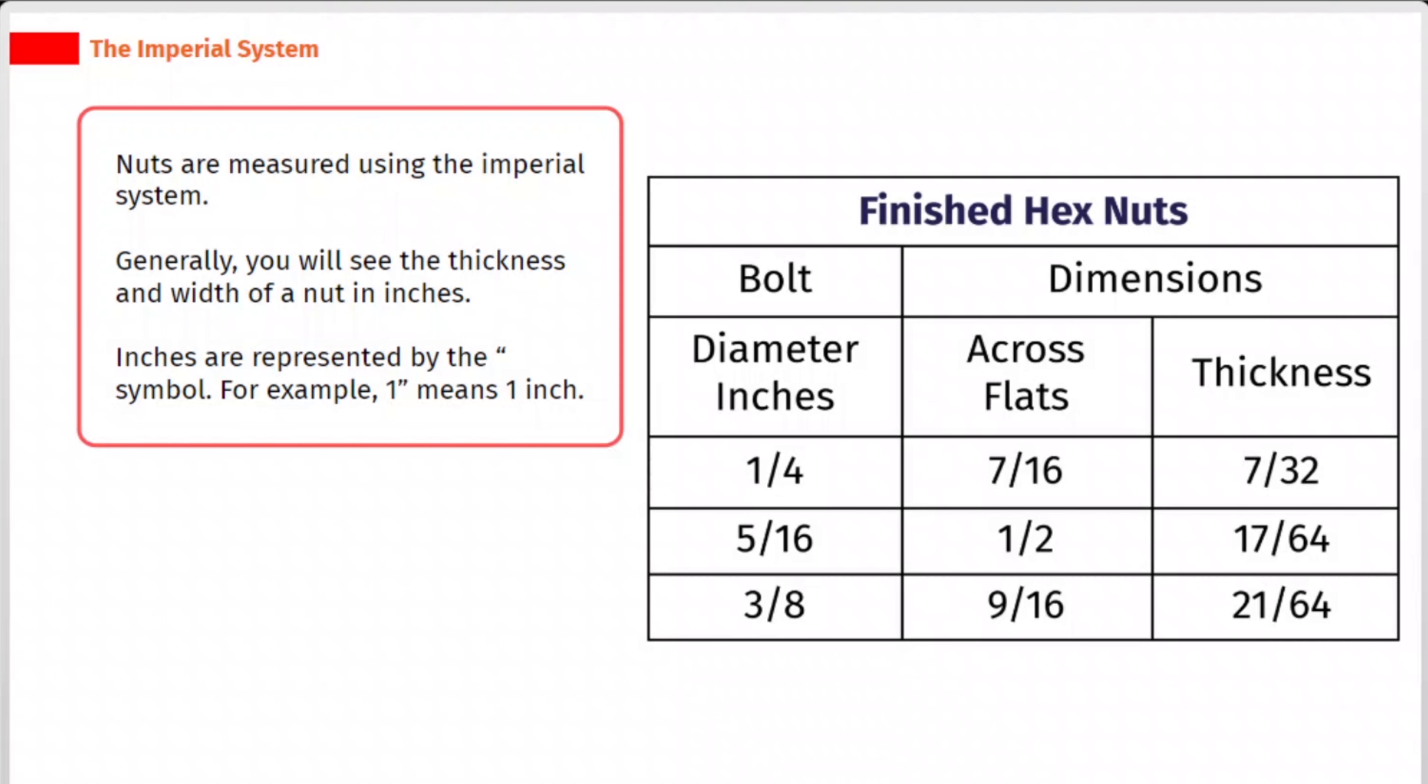Nuts are measured using the imperial system. Generally, you will see the thickness and width of a nut in inches. Inches are represented by the double quotes symbol. For example, one double quotes means one inch.